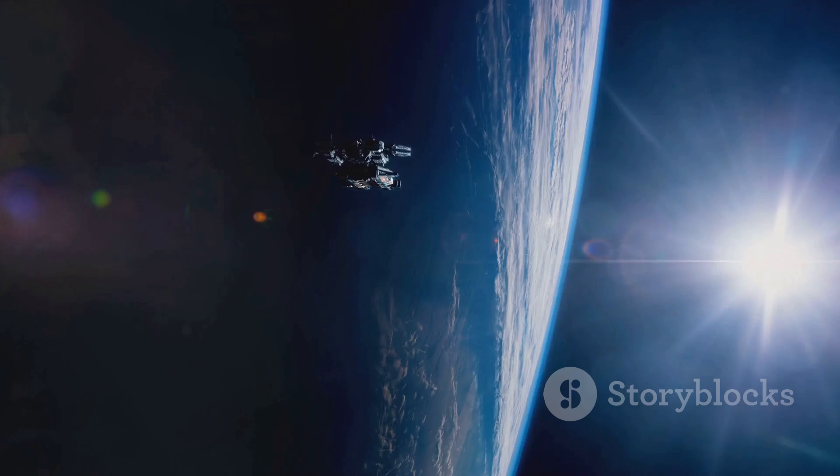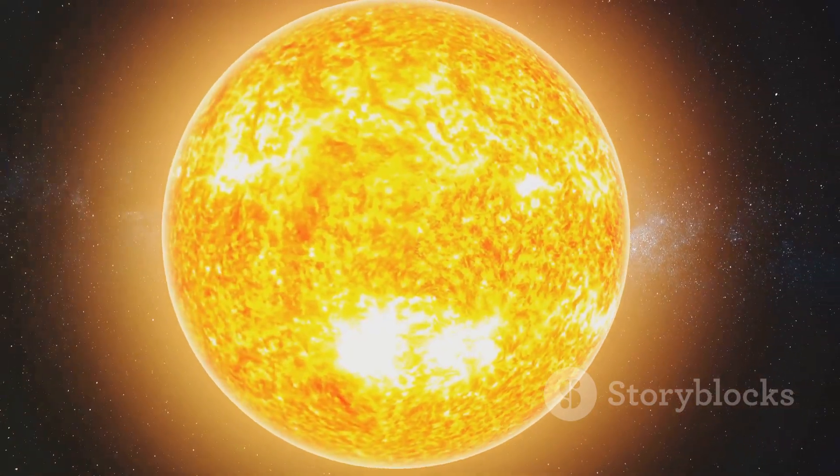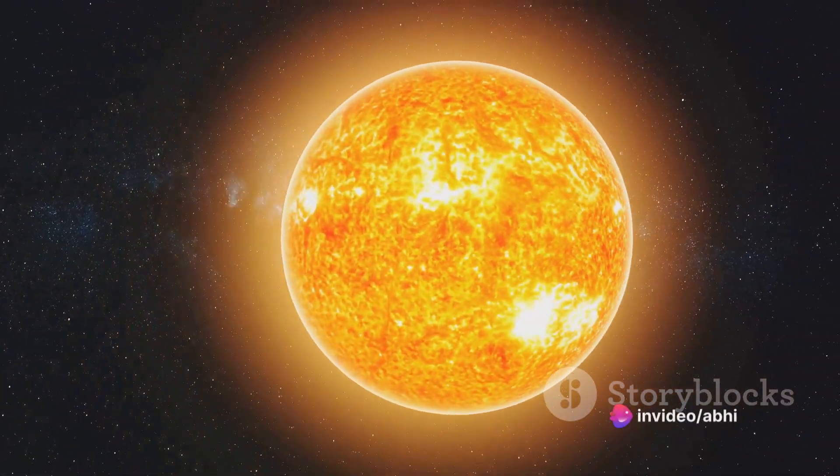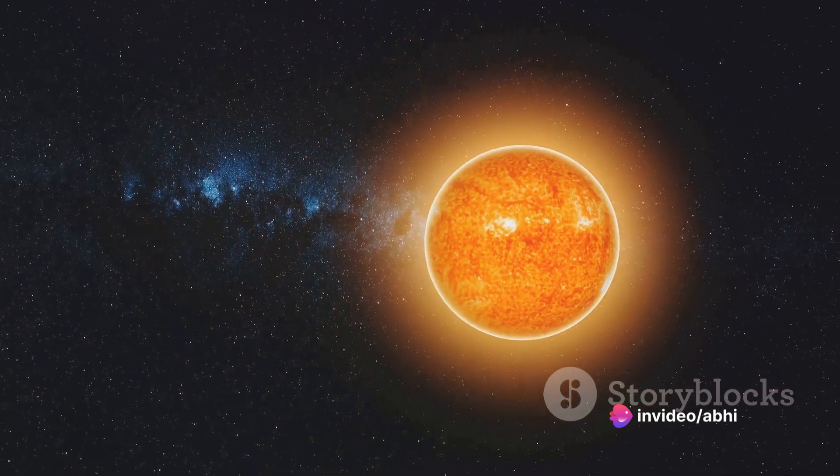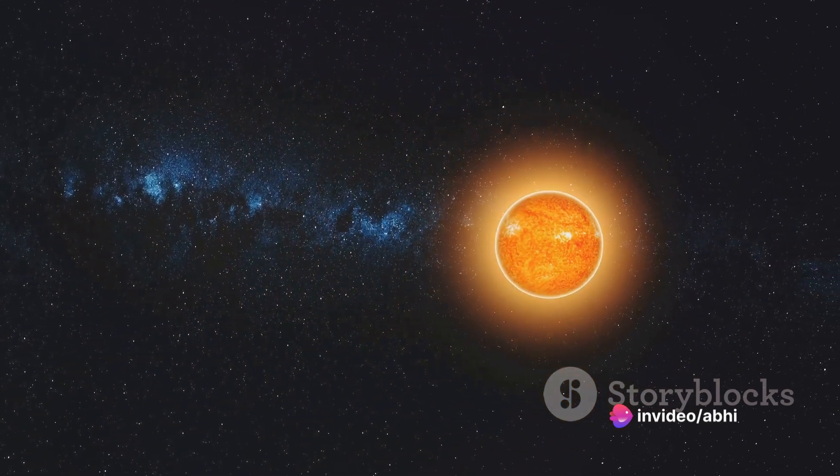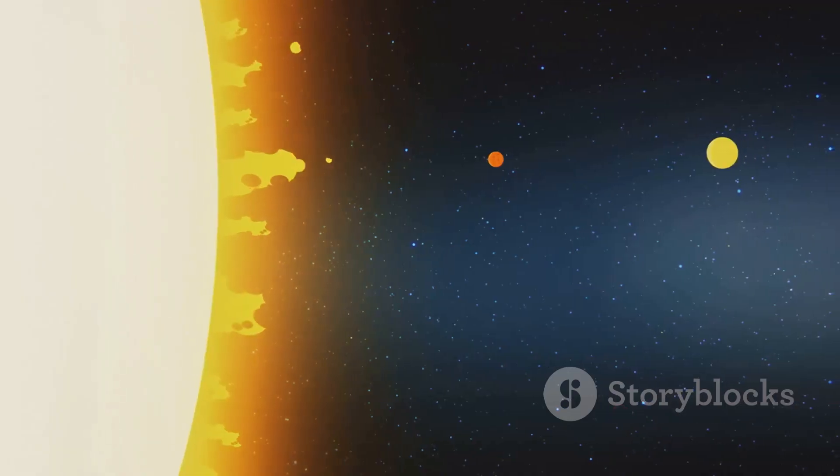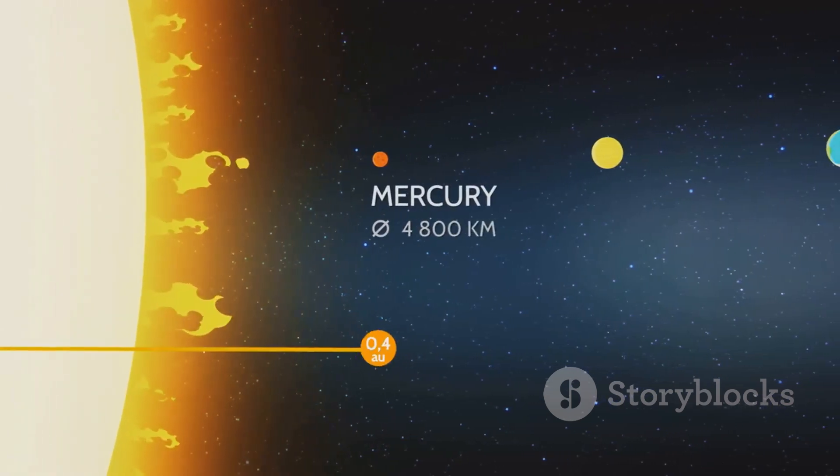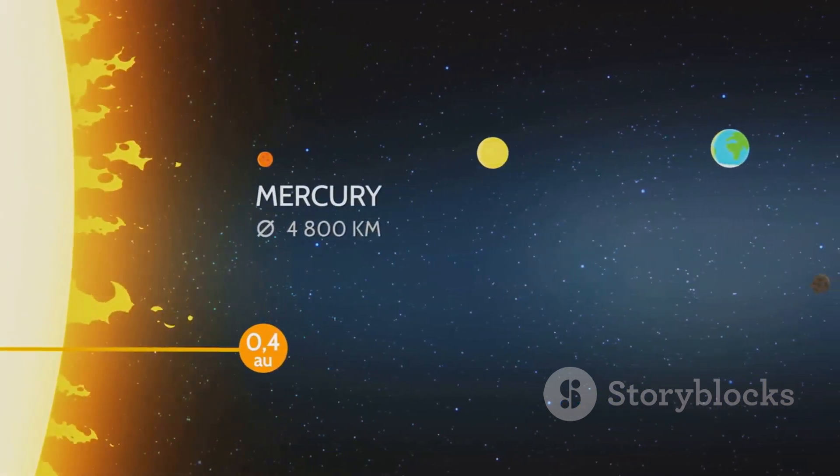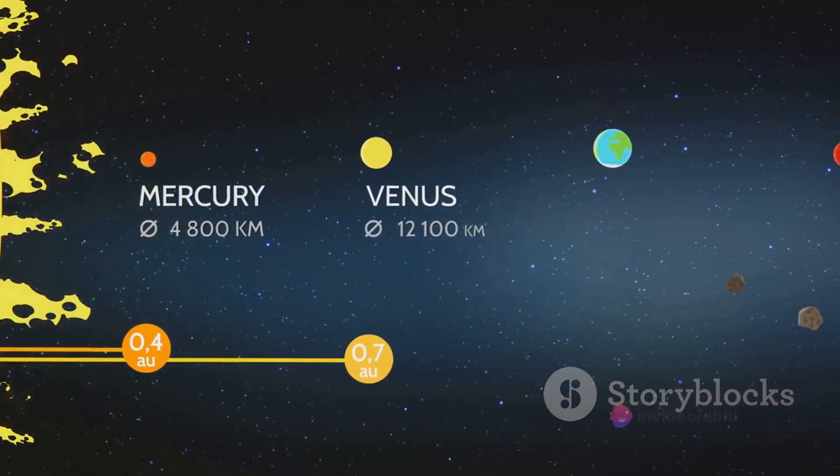This fluctuation in speed is what ensures that the swept area remains constant. When the planet is closer to the Sun, its increased speed allows it to cover more distance in the same amount of time, and therefore sweep the same area as when it's further away but moving slower.